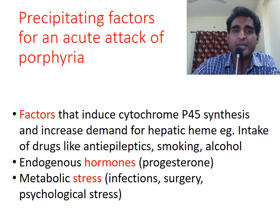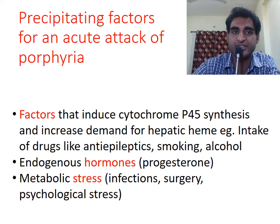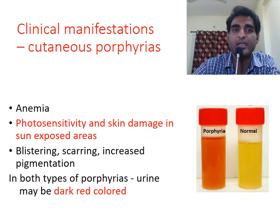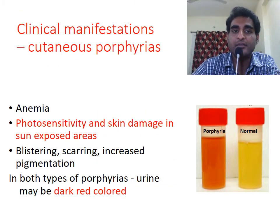Some examples of factors that trigger an acute attack of porphyria are intake of drugs that induce cytochrome P450 synthesis, metabolic stress, and progesterone. Cutaneous porphyria presents with anemia, blisters, scarring, and increased pigmentation of sun-exposed areas.